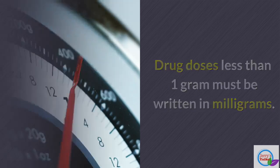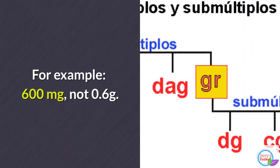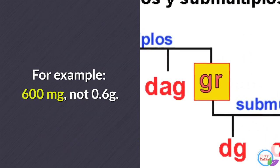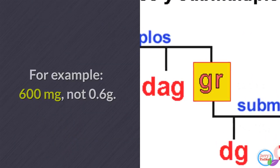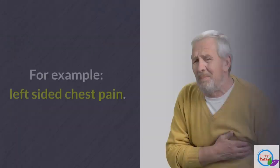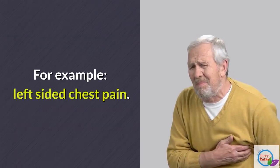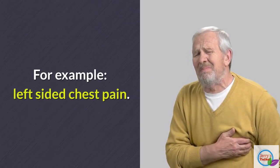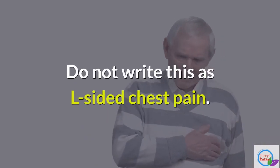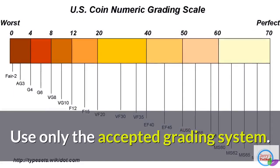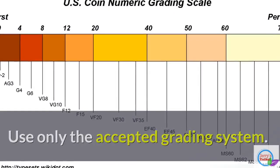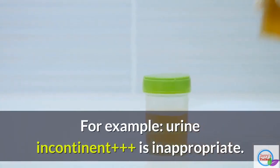Drug doses less than one gram must be written in milligrams. For example, write 600 milligrams, not 0.6 grams. Right and left should also be written in full — for example, write 'left-sided chest pain', not 'L-sided chest pain'.